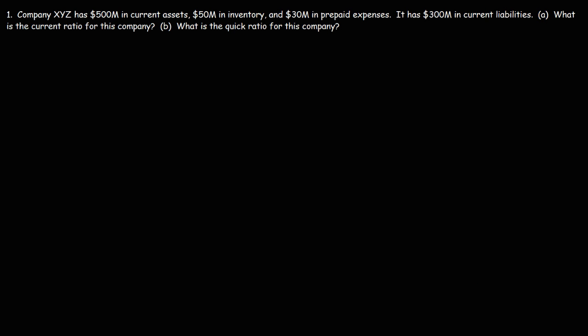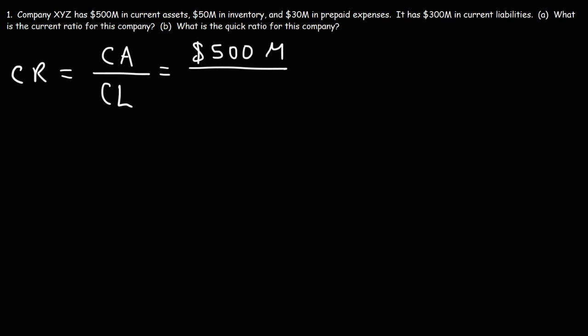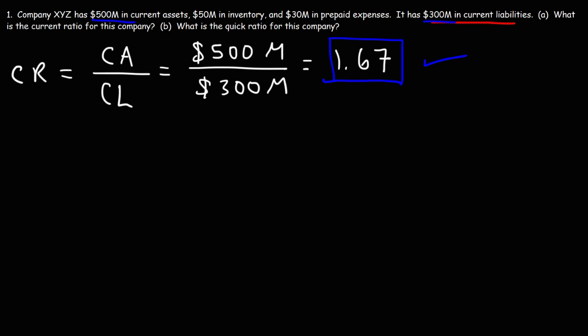Let's work on a practice problem. Company XYZ has $500 million in current assets, $50 million in inventory, and $30 million in prepaid expenses. It has $300 million in current liabilities. What is the current ratio for this company? The current ratio is current assets divided by current liabilities: $500 million divided by $300 million, which equals 1.67. It's above 1, which means the assets exceed the liabilities. That's how you calculate the current ratio of a company.